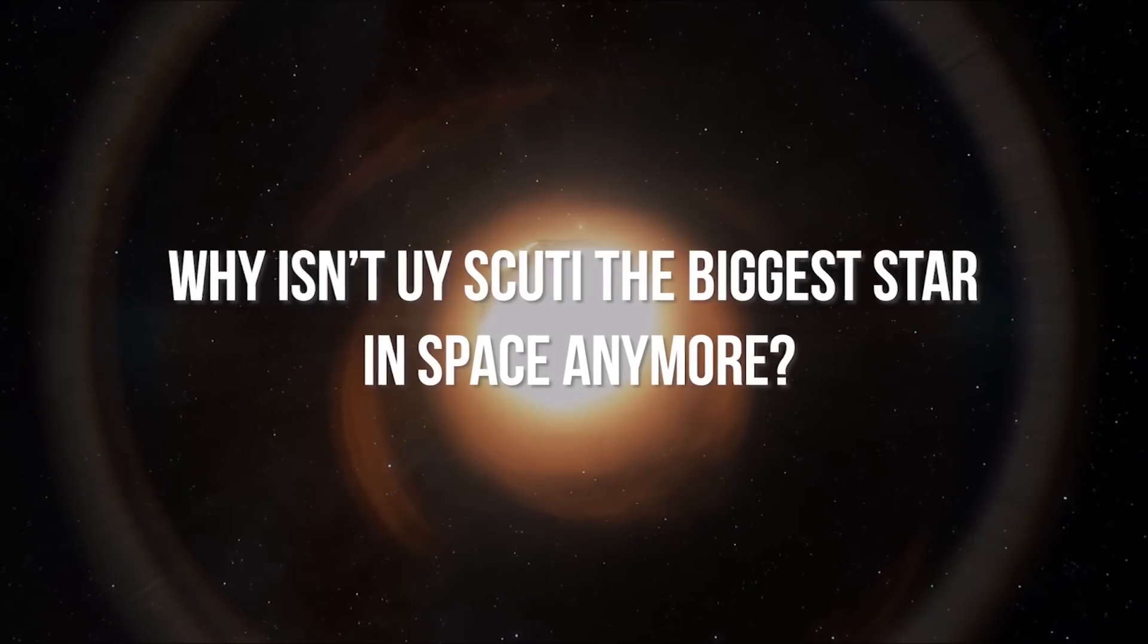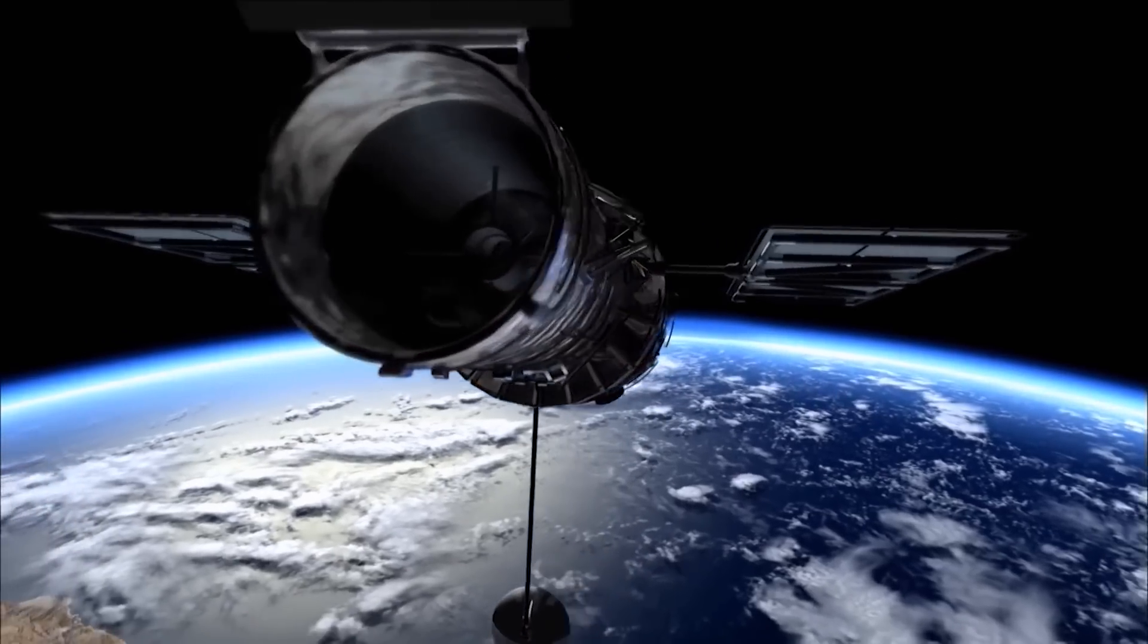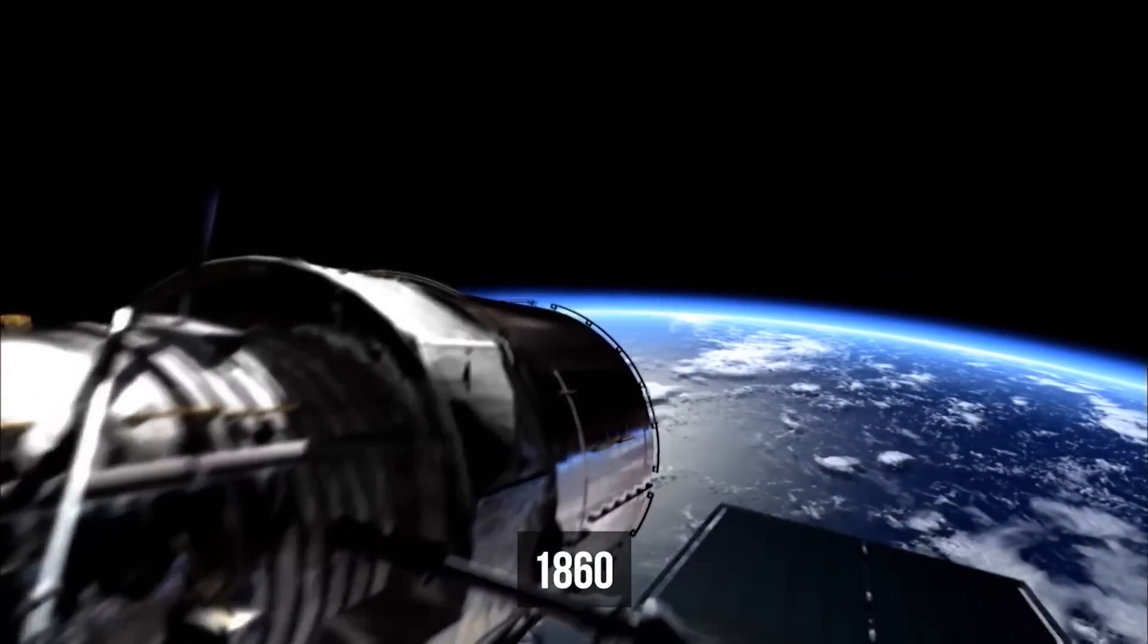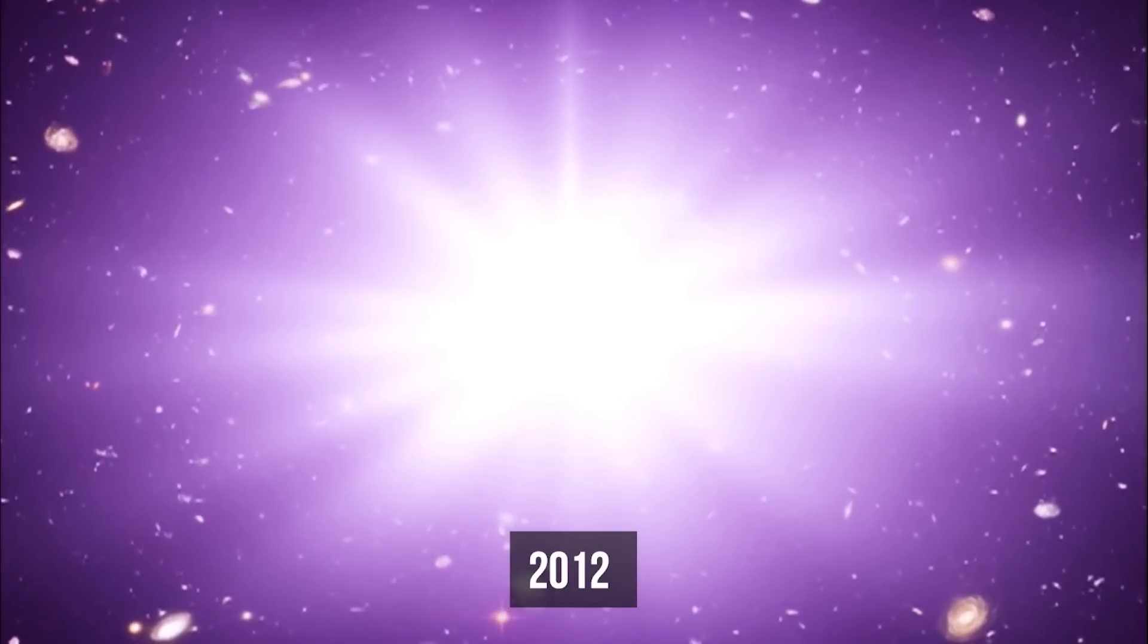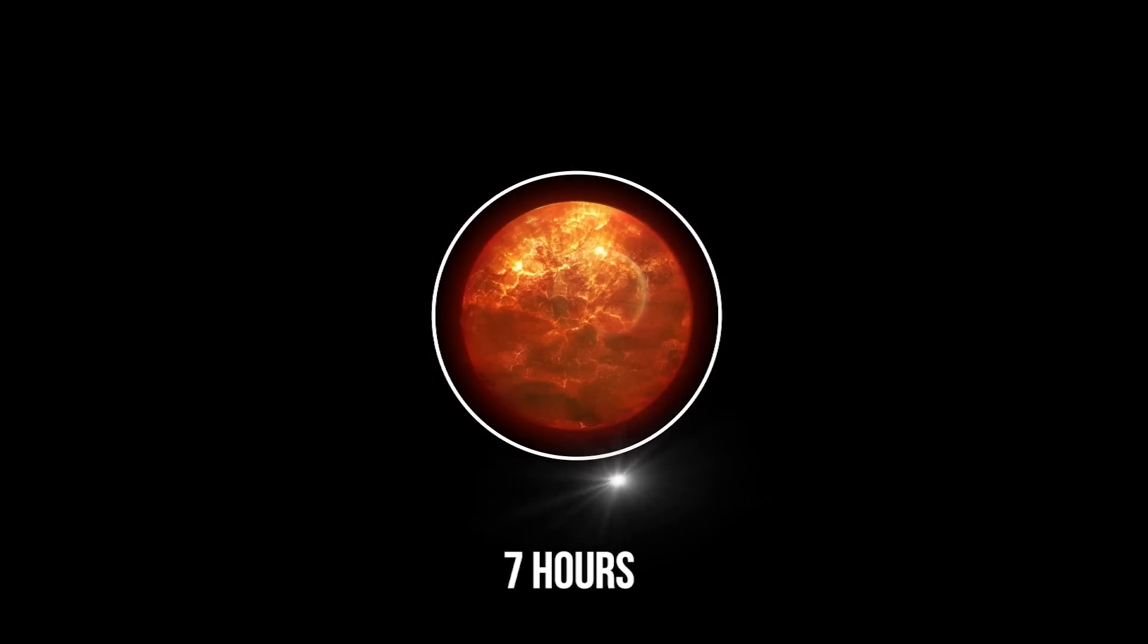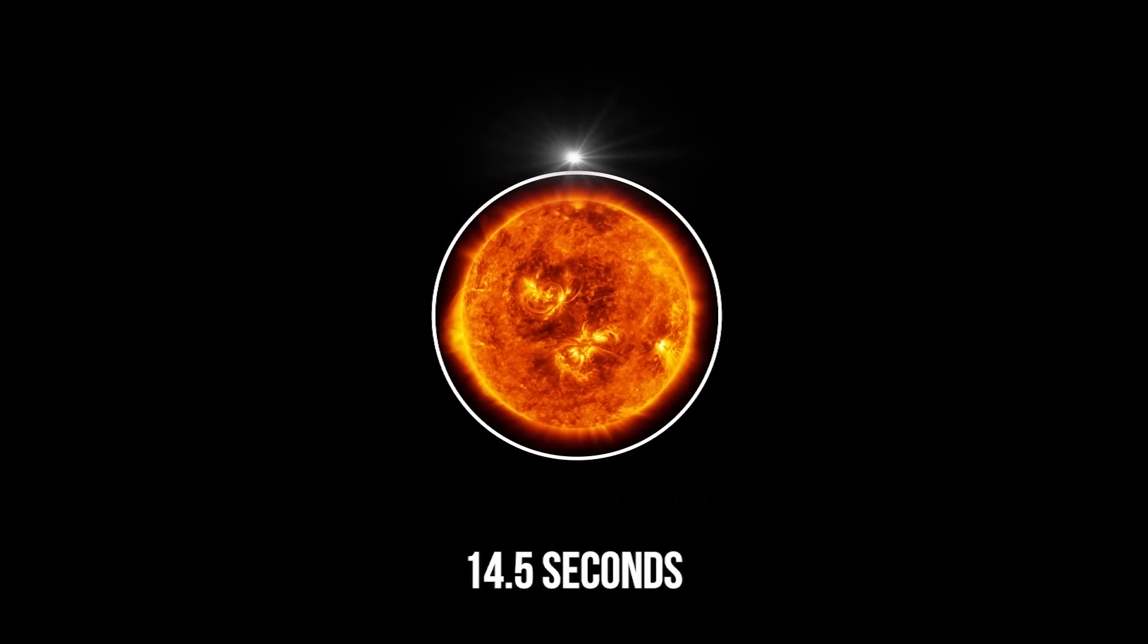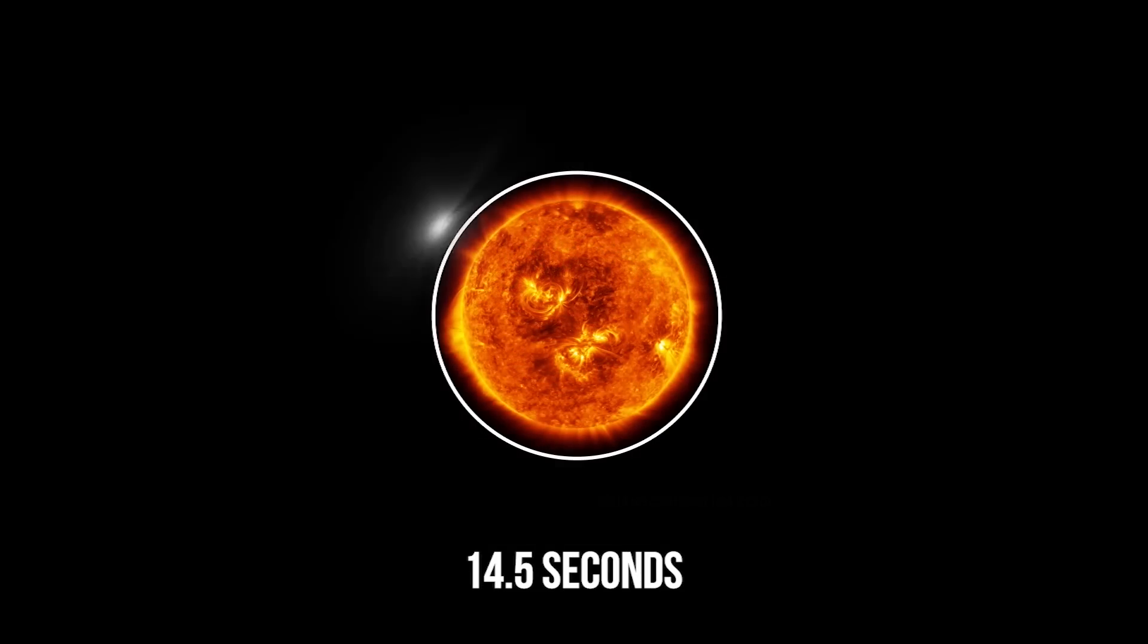Why isn't UY Scuti the biggest star in space anymore? Scientists discovered it back in 1860, but finally determined its size only in 2012. It turned out that UY Scuti is so huge that it even takes light seven hours to travel around it. By comparison, you'll need just 14.5 seconds to circle our sun at the speed of light.